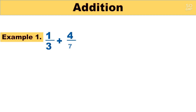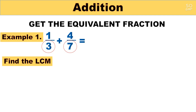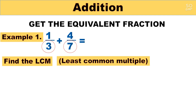Example number 1: 1 over 3 plus 4 over 7. As we can see, our fractions have different denominators — 3 and 7. So what we will do is get the equivalent fractions. To get the equivalent fractions, we will find the LCM, or the least common multiple, of 3 and 7.